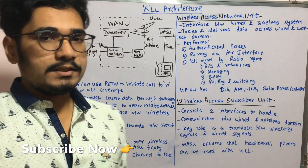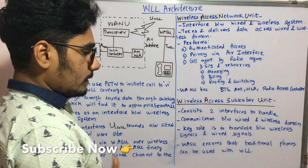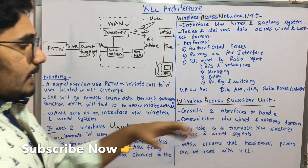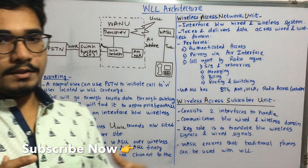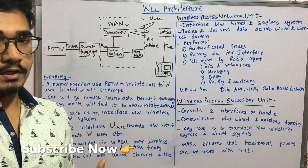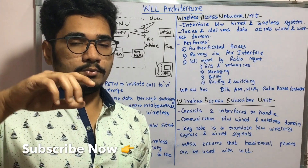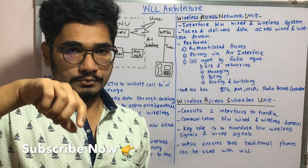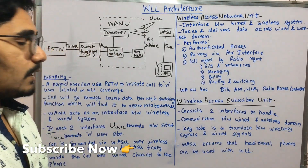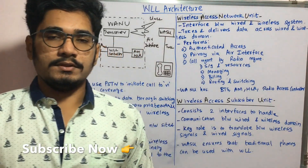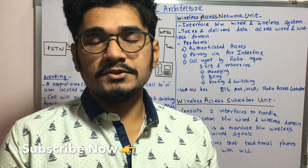VASU translates signals into appropriate forms — whether it is a text message or a voice message. VASU also ensures that traditional phones can be used with WLL. Not only modern caller ID phones, but also old phones with the rotary ring dial setup can be used with this system. All those older devices and units are compatible with WLL.